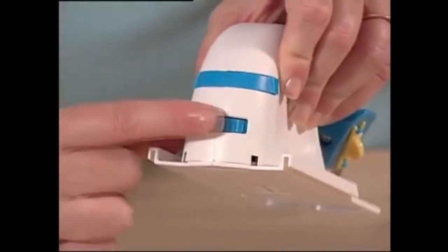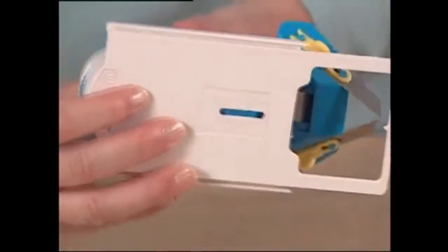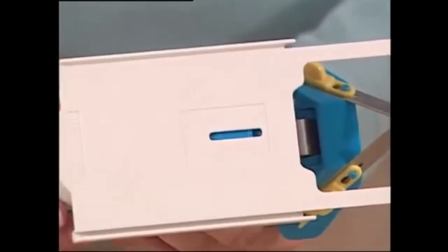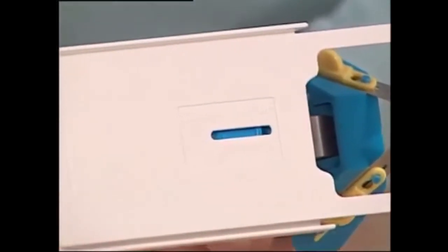To adjust blade depth on the V-Groover, find the blade depth dial on the rear of the tool. This adjusts the blade depth gauge on the underside of the V-Groover, from deeper to more shallow.